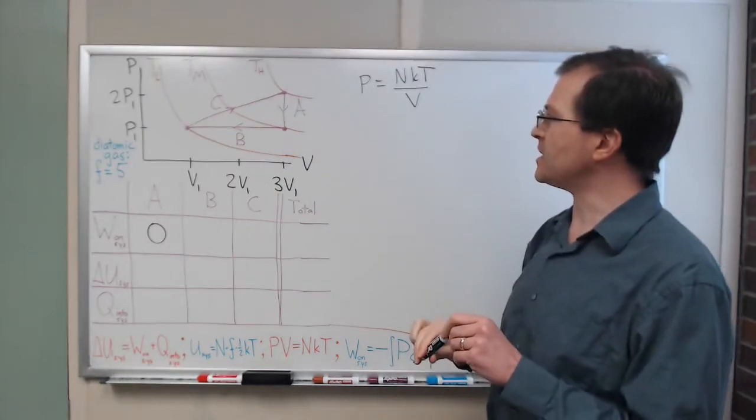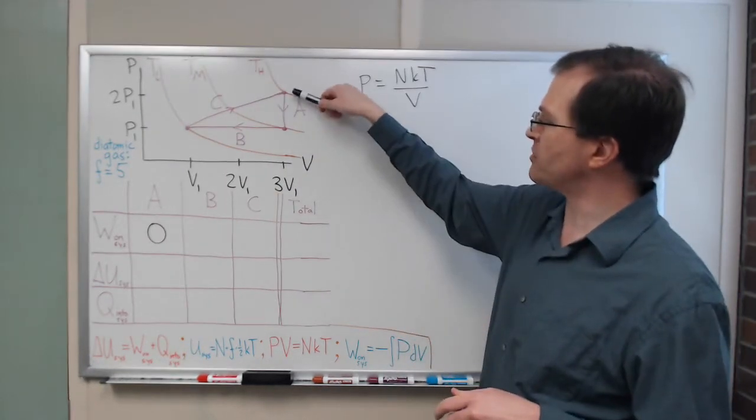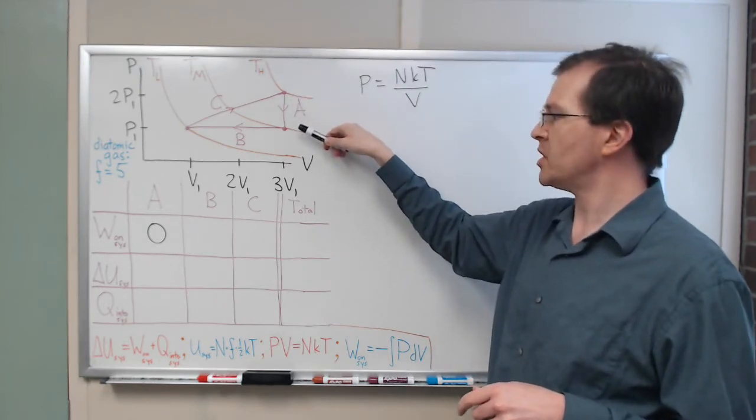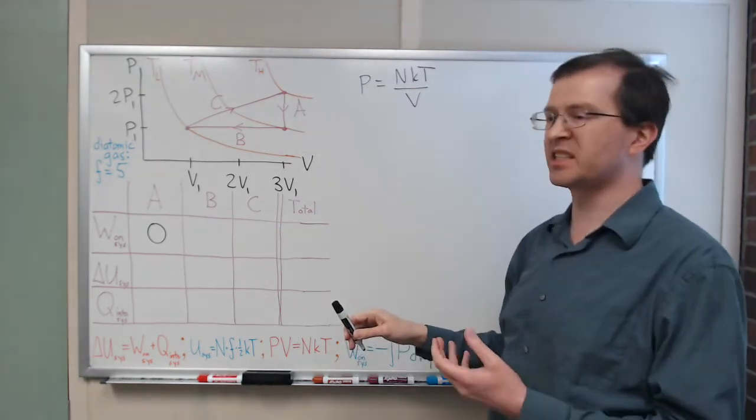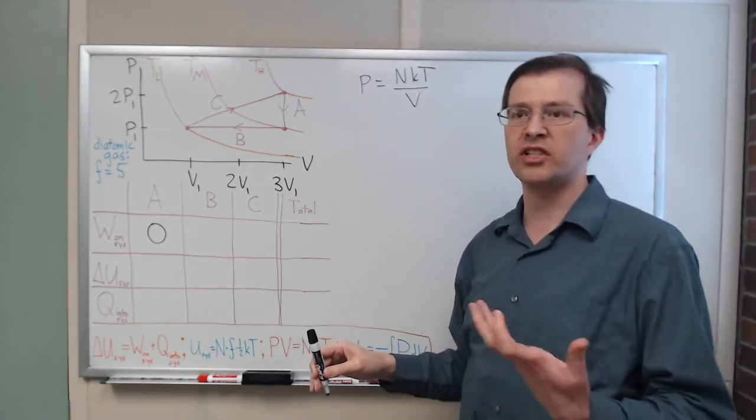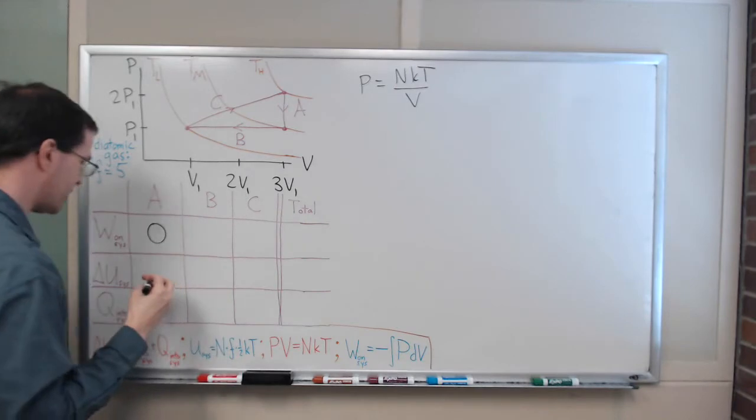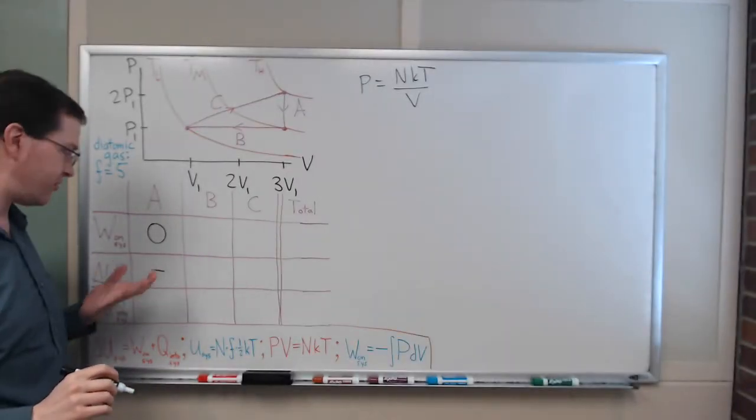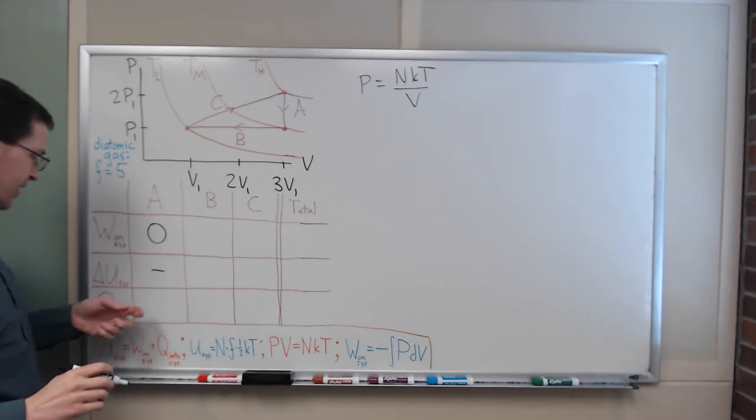You can see in this case that process A takes us from T high to T middle, from a higher to a middling temperature. So, that means our delta T, our temperature went down, so our delta U, our internal energy change, is negative. So, I'm going to put a negative sign here to represent that negative change in internal energy.